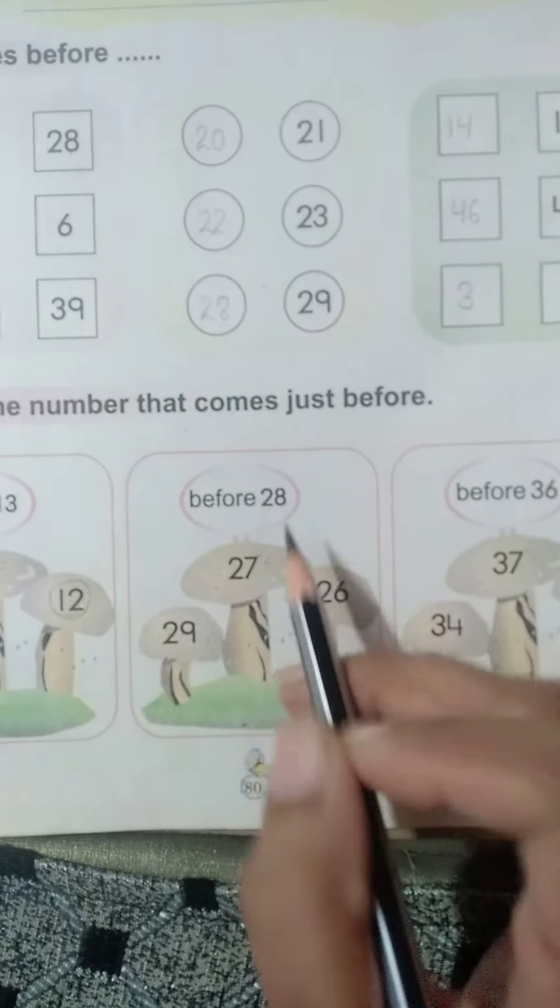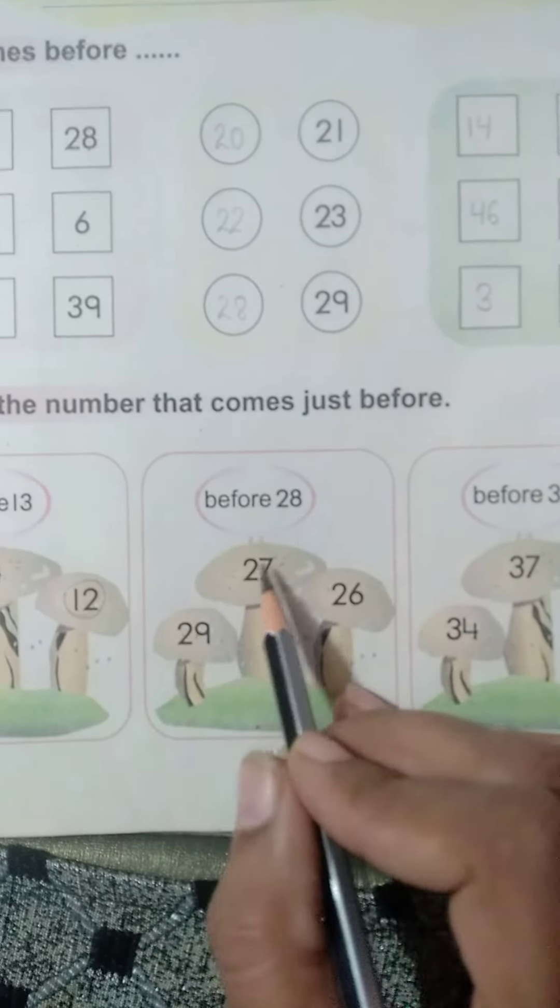Before 28 what will come? 29? No. 27? Yes. So you will circle it. In the same way you will complete it. Thank you. Have a nice day.